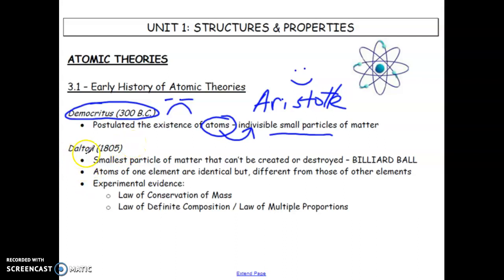And essentially proved or helped to prove that that idea of an atom was actually correct. So proved that the smallest particle of matter that cannot be created or destroyed is the atom. And his model of the atom is sometimes known as the billiard ball model.